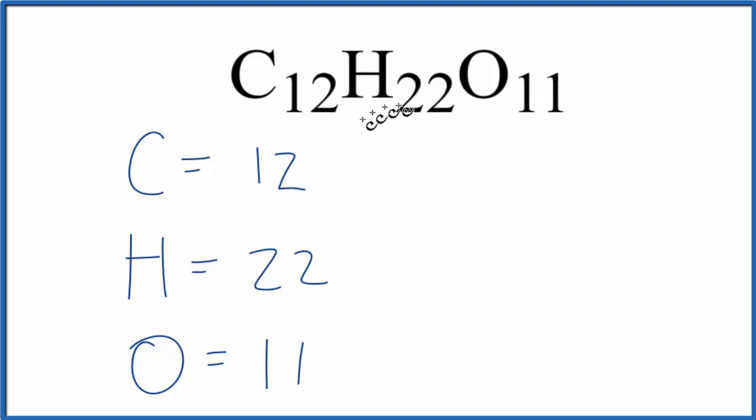Sometimes you want to know how many atoms, for example, how many carbon atoms are in one mole of sucrose. To figure that out, you multiply the number of atoms, this 12 here, carbon atoms, times Avogadro's number.